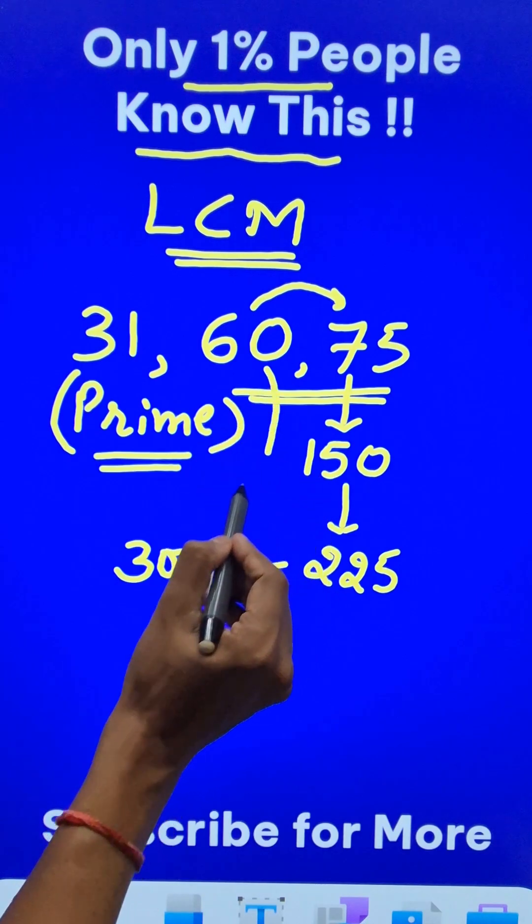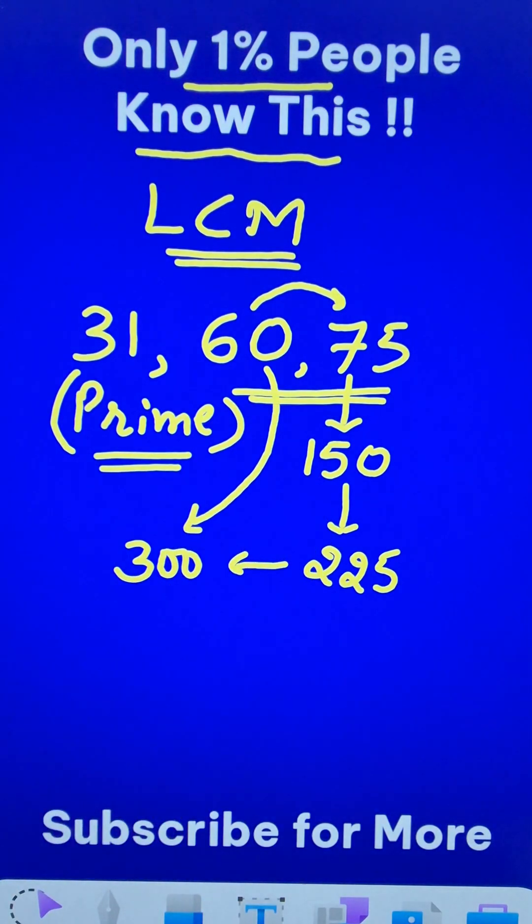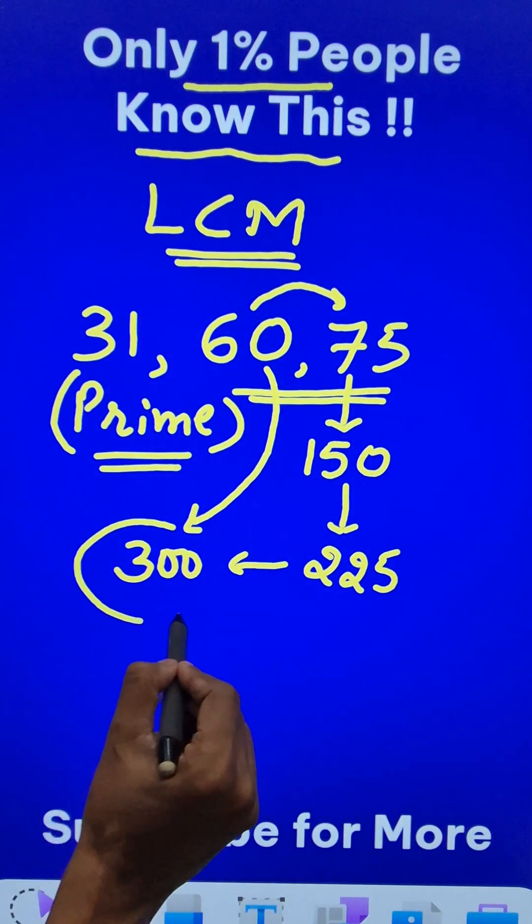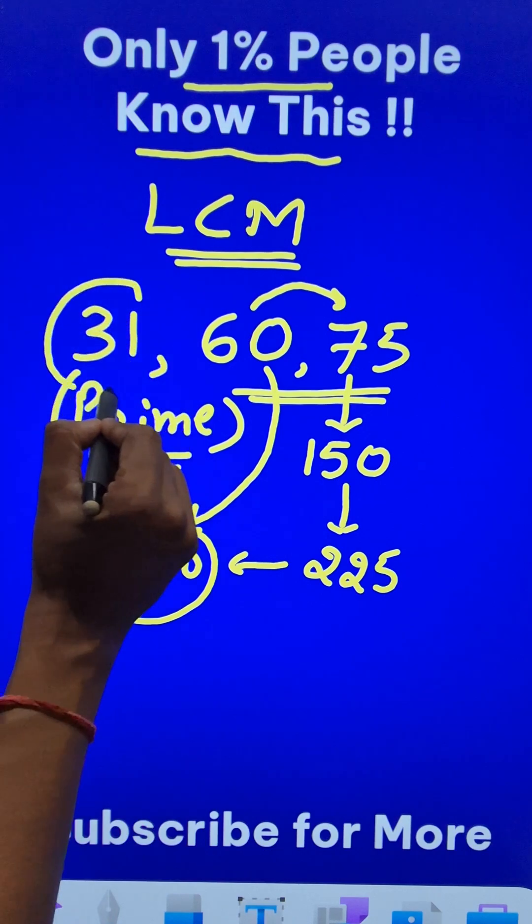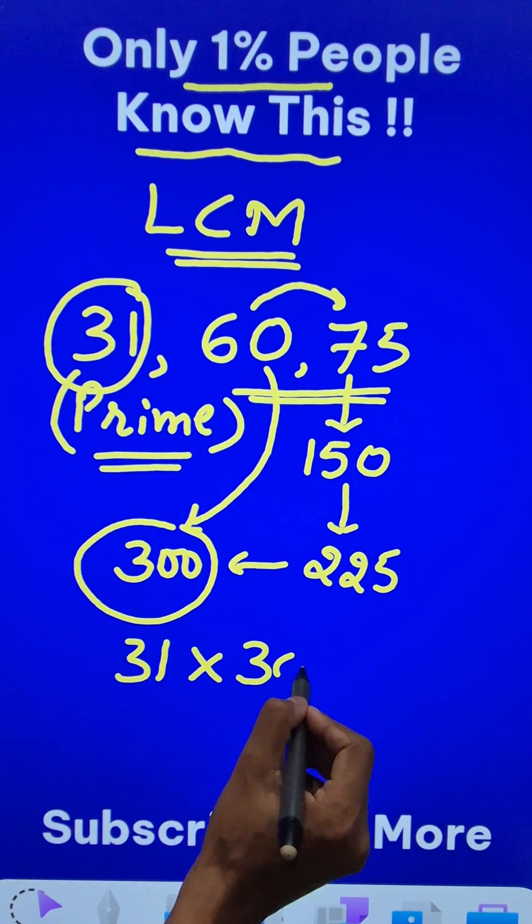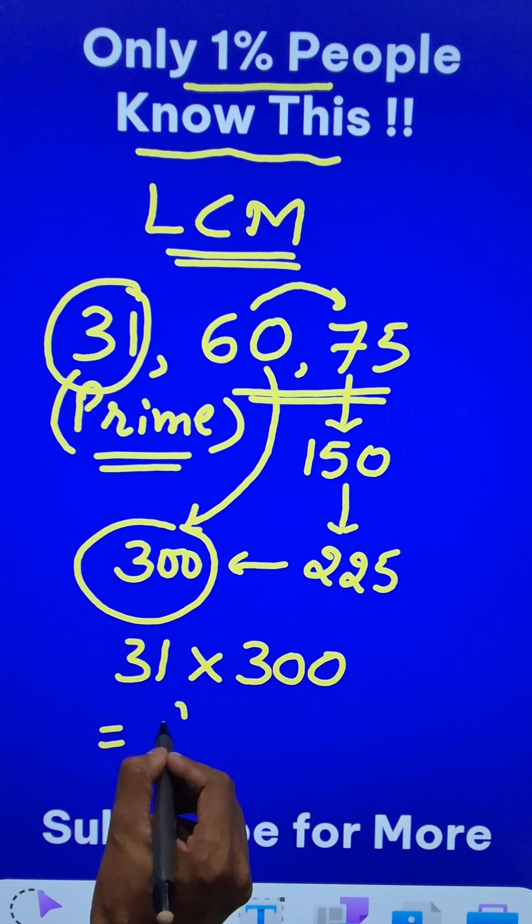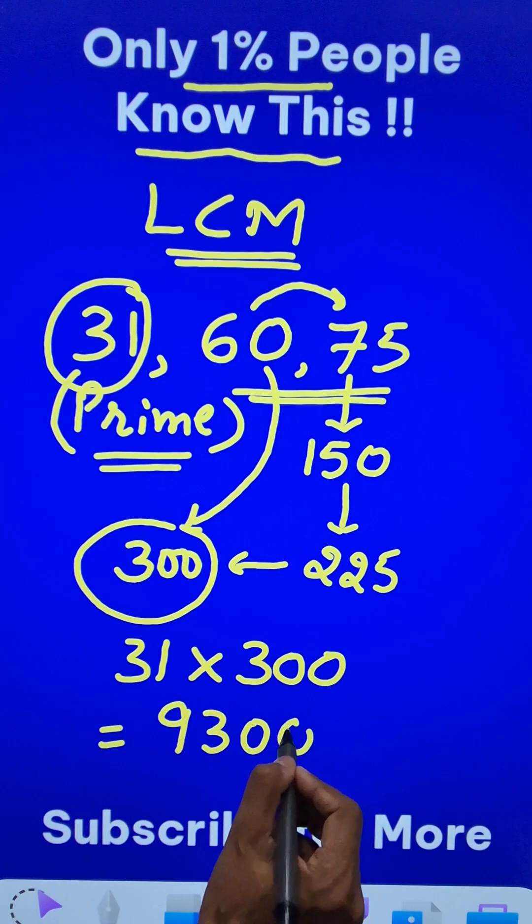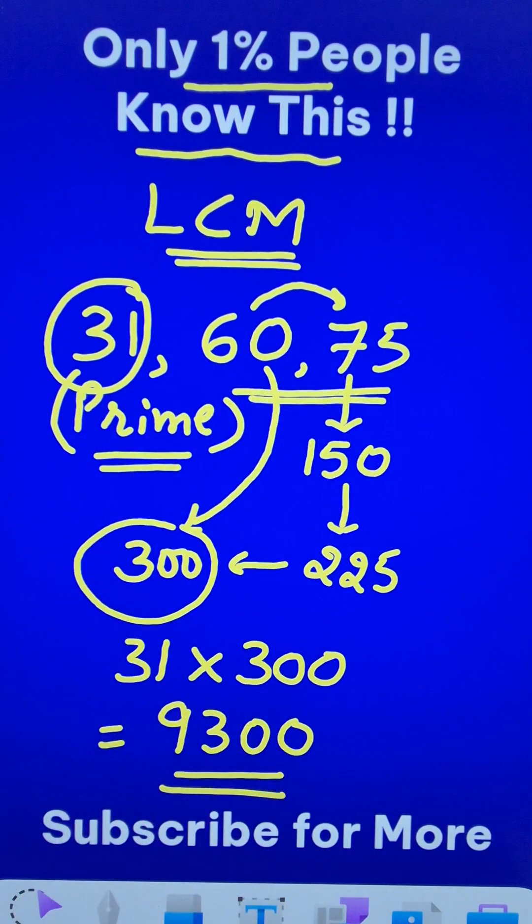Now you can see 60 divides 300 exactly. So we just consider this number 300 and the prime number 31. Just multiply 31 and 300. You will have the final answer, 9300, as the LCM of these three numbers.